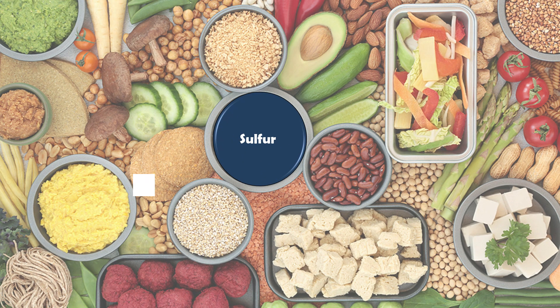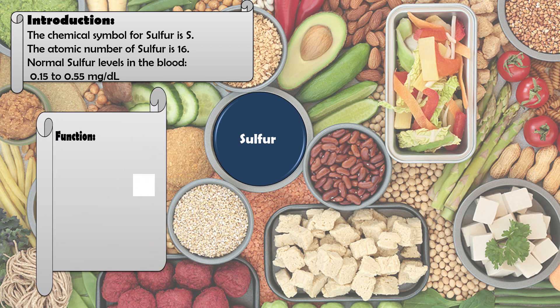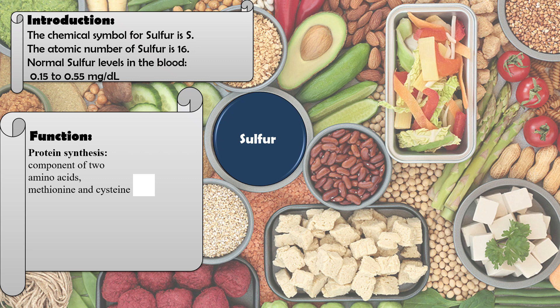The last macromineral is sulfur. The chemical symbol is S and the atomic number is 16. The normal level of sulfur in the blood is 0.15 to 0.55 mg/dL. Sulfur is the main component of two amino acids — methionine and cysteine — and is therefore involved in protein synthesis.